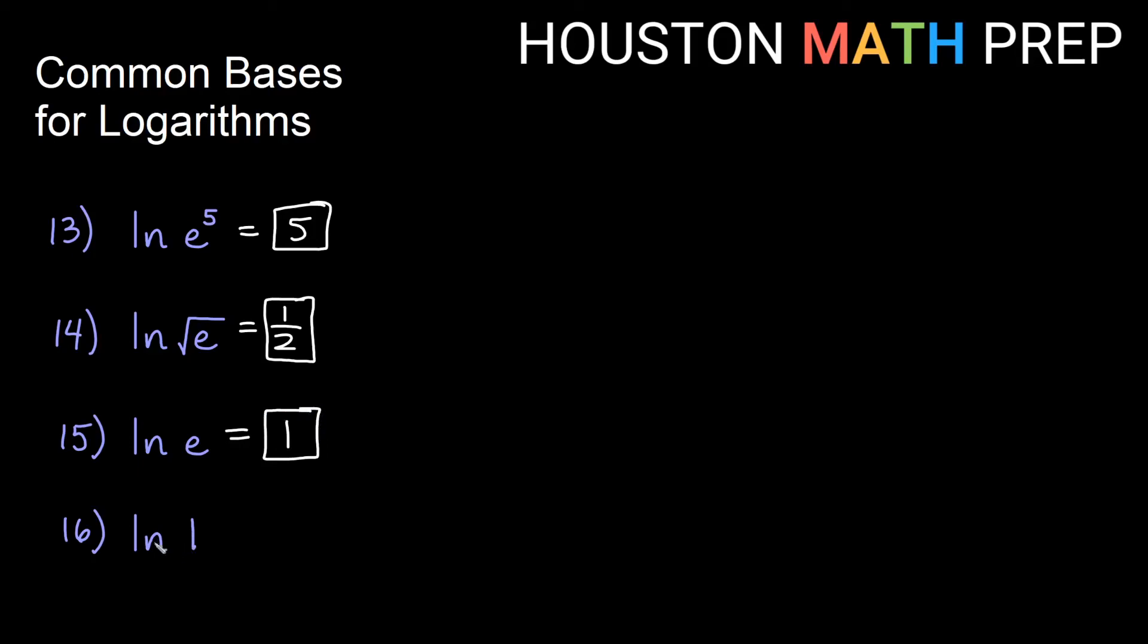Ln of one is saying log base e of one. What power of e gives us one? Well, we should know with logarithms and having one in the logarithm, anything to the zero power is going to give us one. Whether it's base e or not.